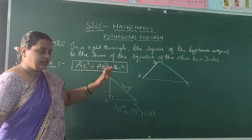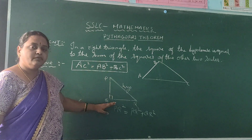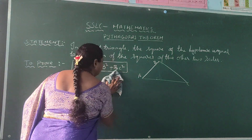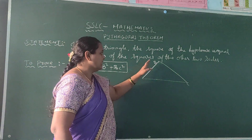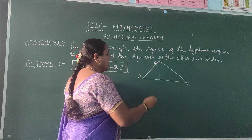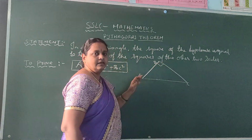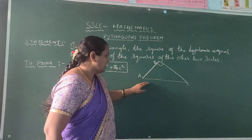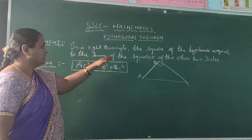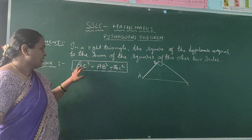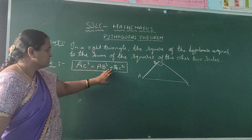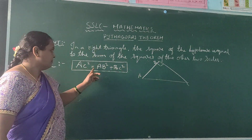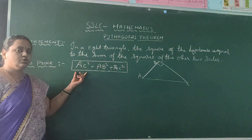You should know how to write the statement and draw the diagram, because it is very important to find the hypotenuse correctly. Now I am considering triangle ABC as the right angle triangle with right angle at B. The 90 degree is at B, so AC is the hypotenuse. According to the theorem, AC square is equal to the sum of the squares of the other two sides AB and BC.